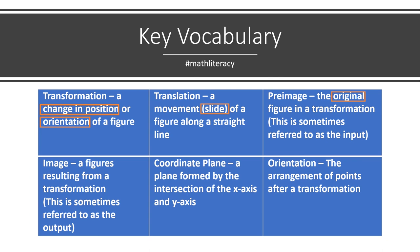An image is a figure resulting from the transformation. This is sometimes referred to as our output. We have the coordinate plane, which is formed by the intersection of the x and y axis. And then orientation — this came up in our first definition. Orientation is the arrangement of the points after a transformation — the order that the points move around after we perform a transformation.